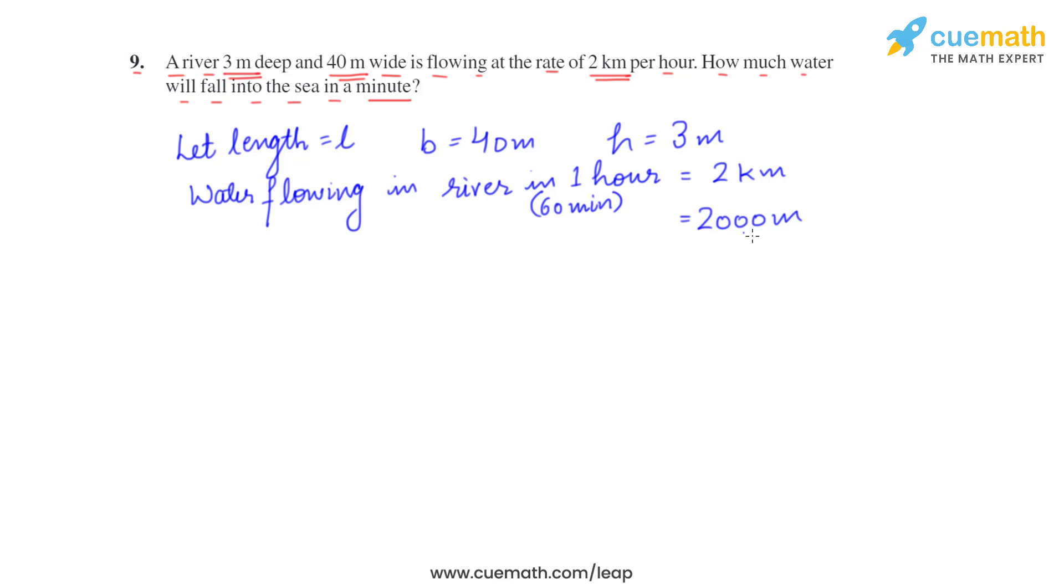So in 60 minutes, 2000 meters of water is flowing in the river. Then in one minute, water flowing in the river will be 2000 divided by 60, which equals 100 by 3 meters.